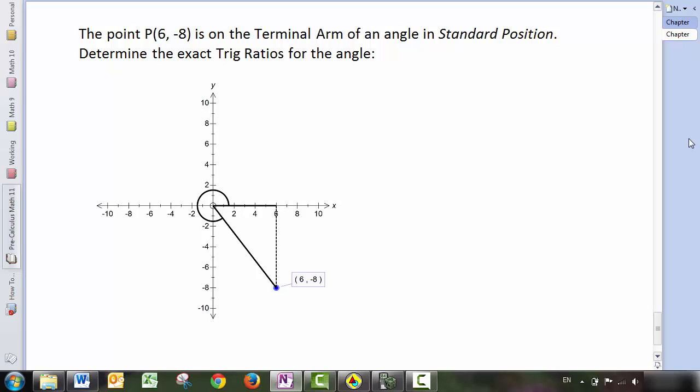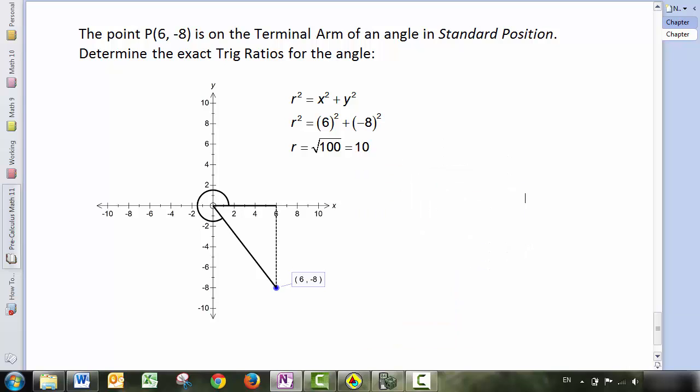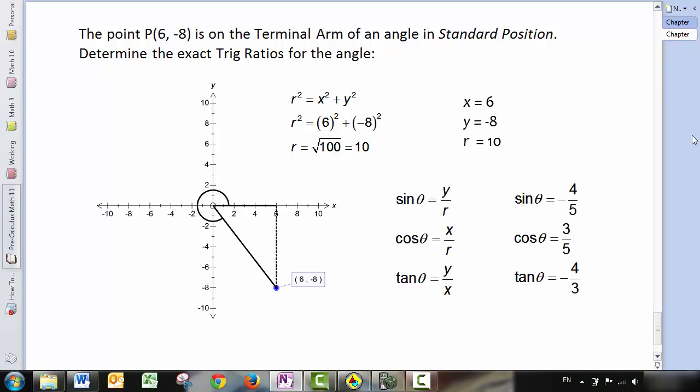Once I've done that, let's go ahead and calculate the value of R. We know X and Y, so it's a simple case of using Pythagorean theorem. If R squared equals X squared plus Y squared, then R is 10. And this means that we can get our trig ratios quite easily as well. Sine will be negative four over five. Cosine, three over five. And tangent, negative four over three.